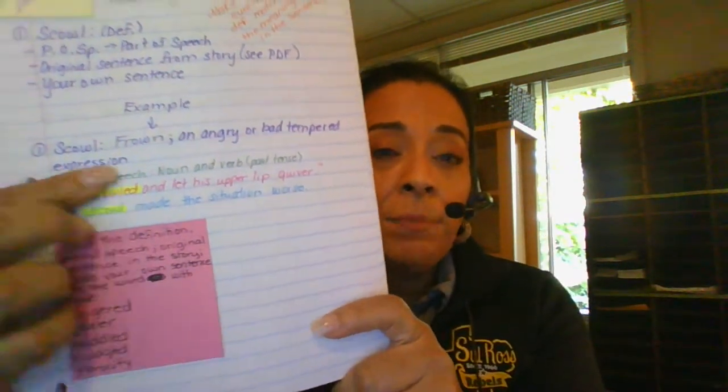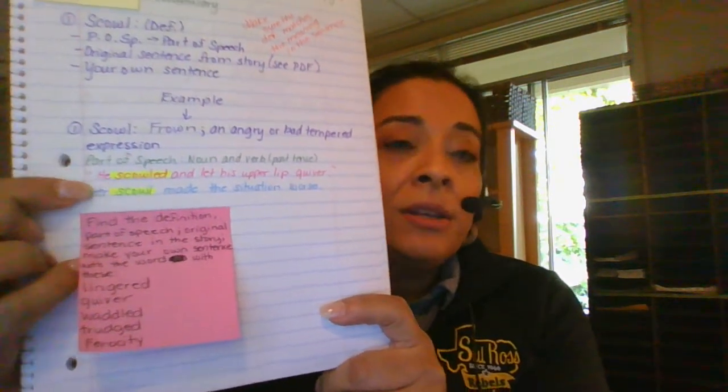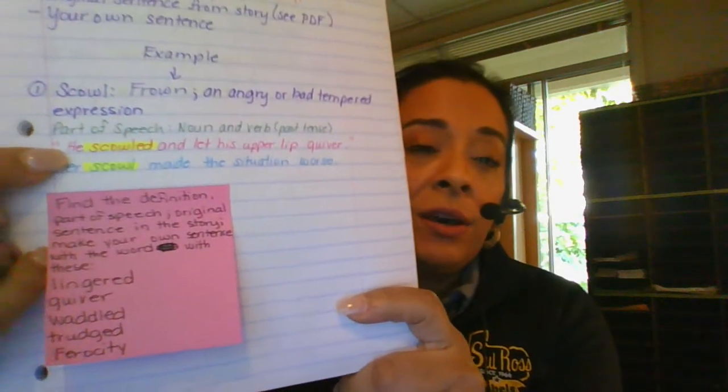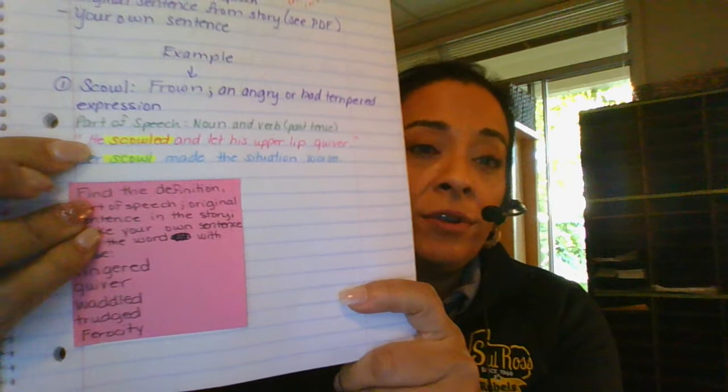And in this case I put a noun and a verb because when it's used in past tense, it's a verb. So here is the original sentence that I found in the PDF: He scowled and let his upper lip quiver.